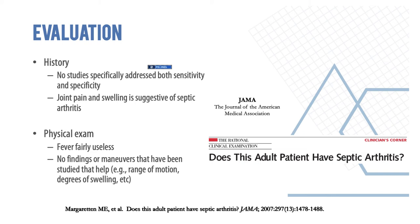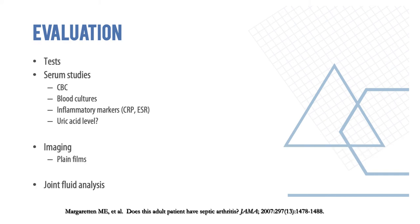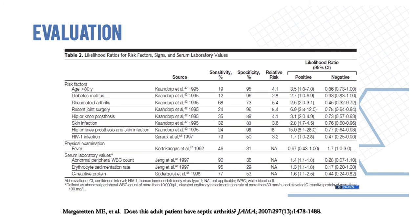There are limited studies on the sensitivity and specificity of history and physical examination for joint infection. Standard tests include blood counts, blood cultures, inflammatory markers, X-rays, and joint fluid analysis. Joint fluid analysis is the gold standard — aspirating a joint and sending it to the lab to look for infection. Risk factors for joint infection include age over 18, diabetes, rheumatoid arthritis, recent joint surgery, hip and knee prosthesis, and skin infections.